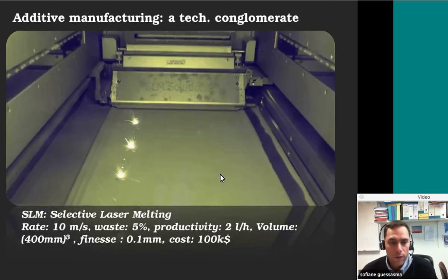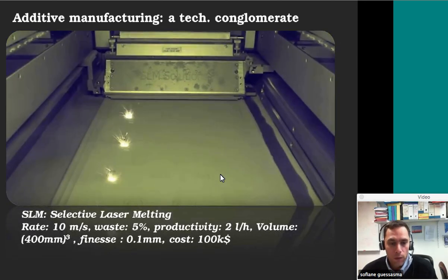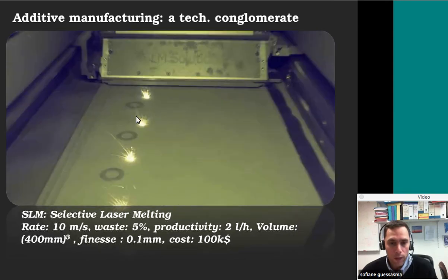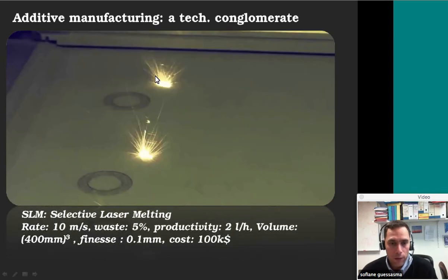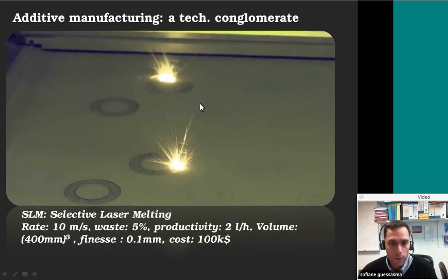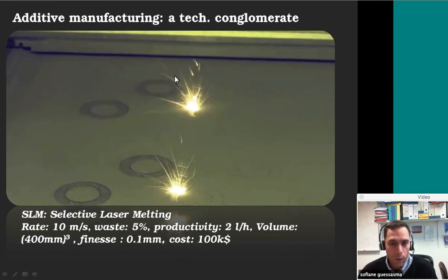This is another technology based on what we call selective laser melting. Instead of having a filament, we have a powder bed, and a laser strikes the surface, draws some patterns, and melts locally in the material. Then you sweep another layer of powder and build the second layer, and so on.